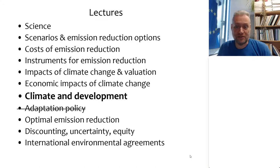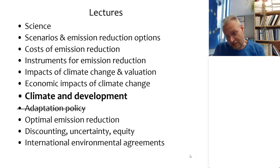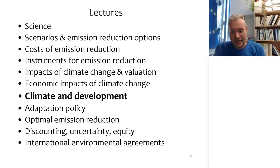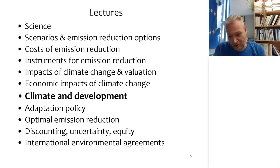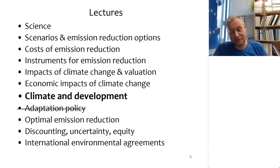In the first couple of weeks we talked about greenhouse gas emissions, options for emission reduction, costs of emission reduction, and policies for emission reduction. Then we talked for a while about the impacts of climate change, and that is coming to an end today. After today we're going to talk about optimal climate policy, how different definitions of optimality affect it, and finally international environmental agreements.